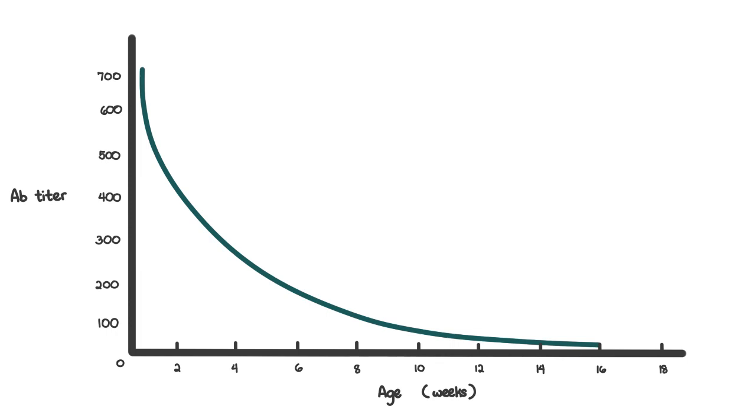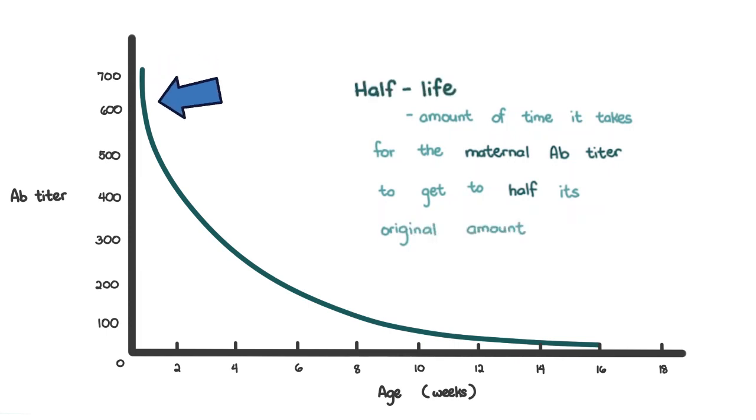I'm going to introduce a new term here. The amount of time it takes for the maternal antibody titer to get to half of its original amount is known as the half-life. In this example, it's two weeks. When that amount of time passes again, it'll decrease by half again, and will continue to do so until the maternal antibodies are gone.